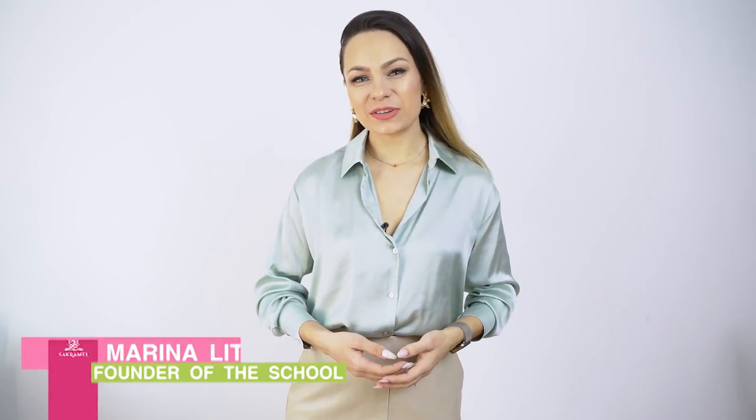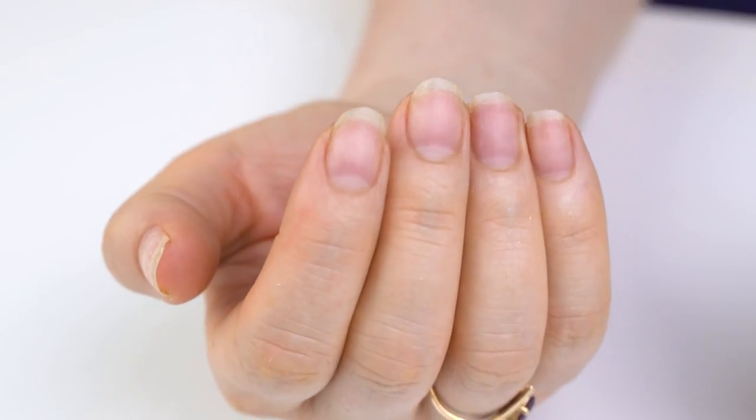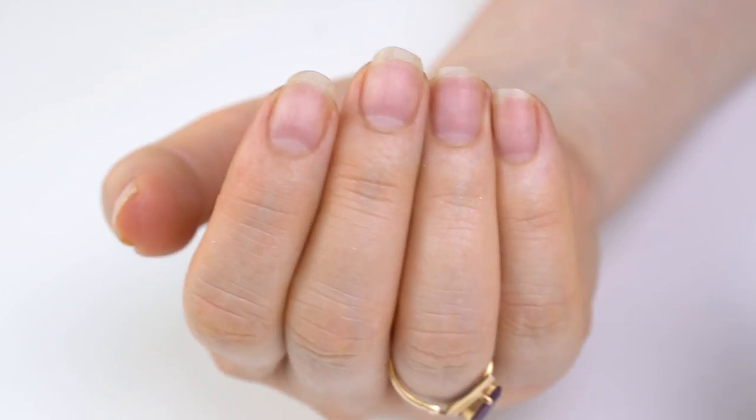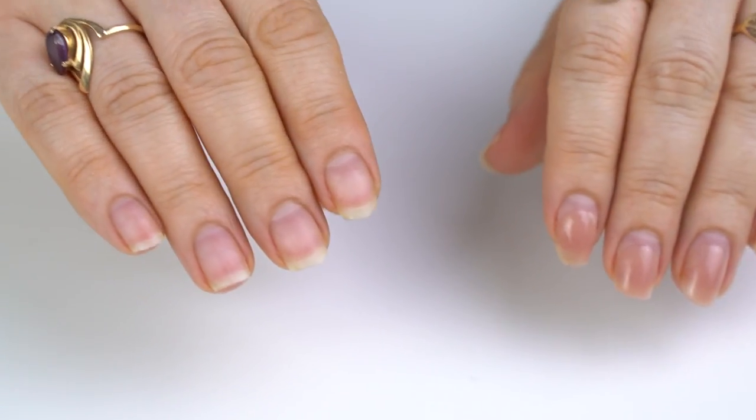Hello everyone, I'm Marina and it's Acromel School. Here are my today's model's nails. There is a gel coating on one hand, while there is none on the other one. It fell off.